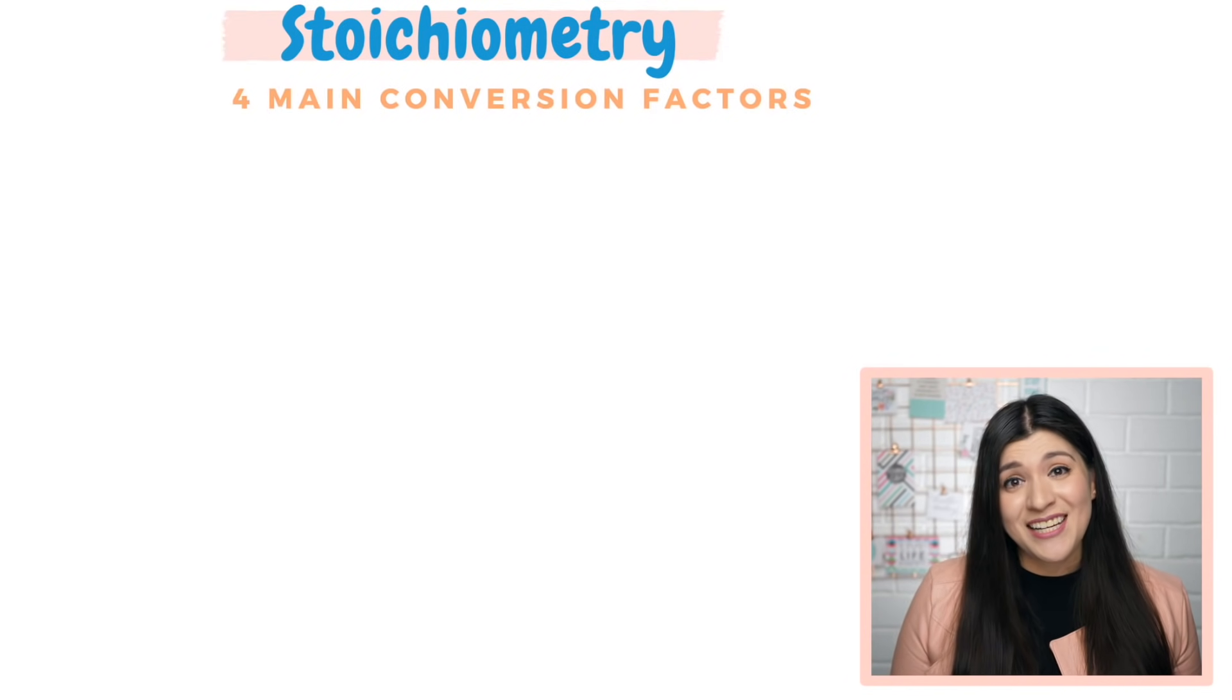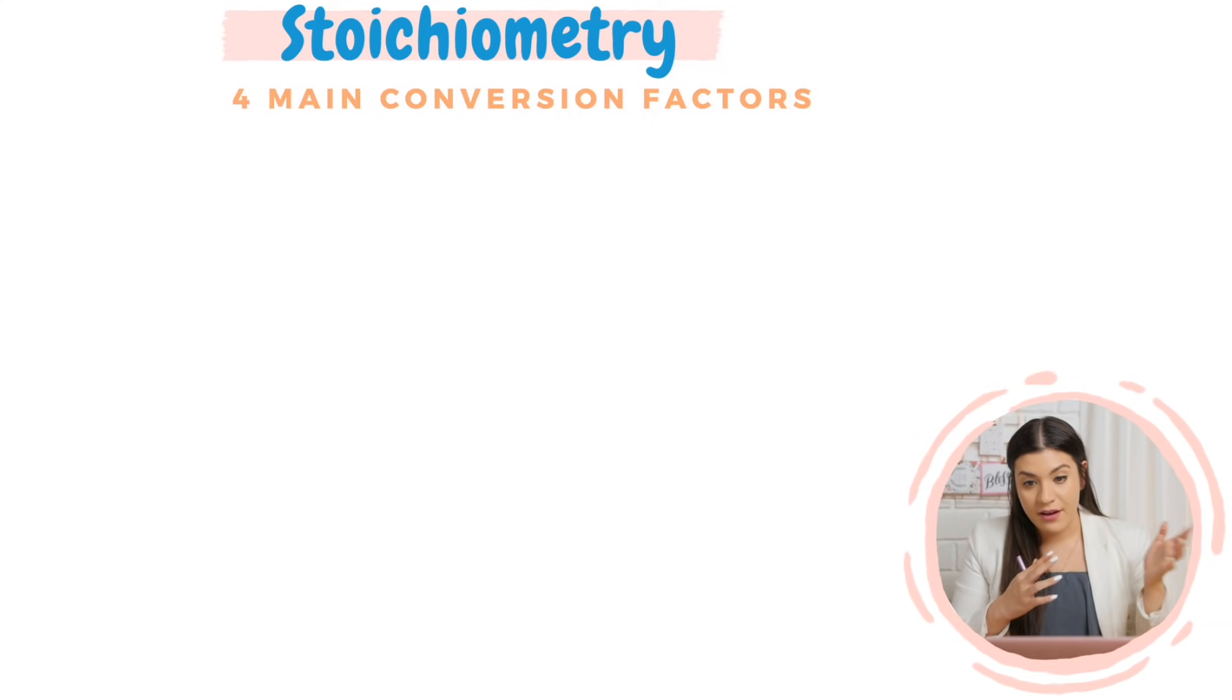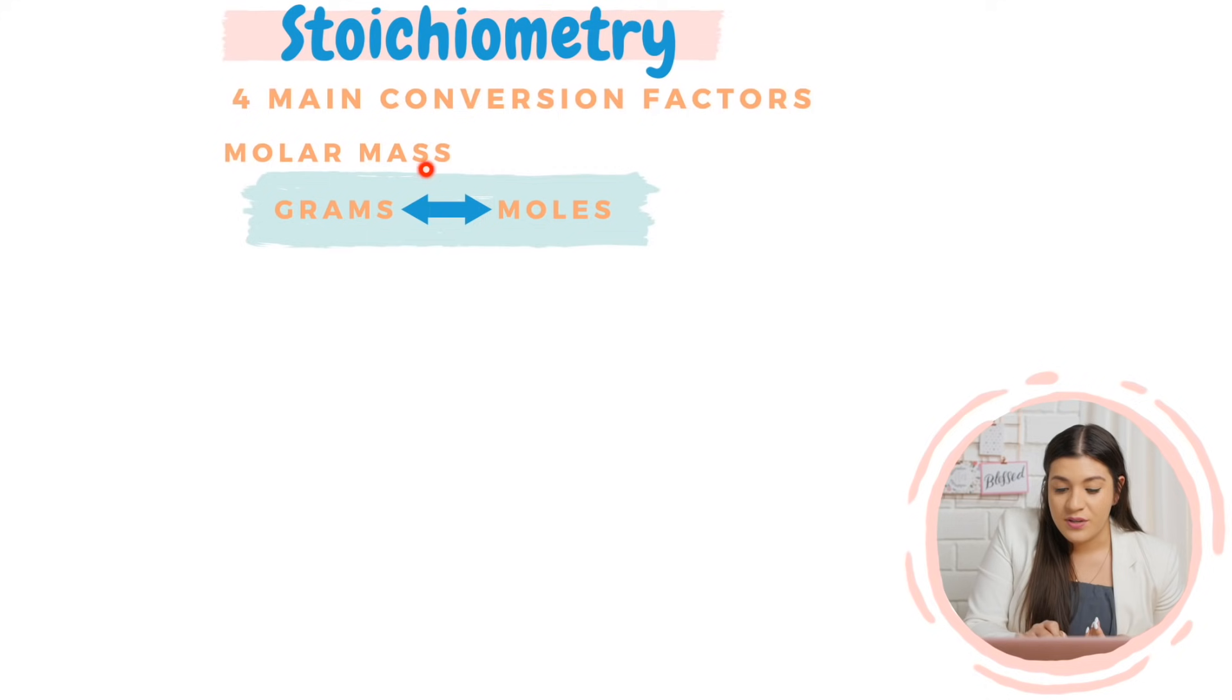All right, you ready to do some stoichiometry? So these four conversion factors, how I want you to think of stoichiometry and these board problems, they're kind of like puzzles. And the puzzle pieces are these four main conversion factors. So these conversion factors are going to tell you how to connect everything and how to move from one unit to a completely different unit. So the first one that I want you to write down is molar mass. We know, but I'm still going to have you write it down, that molar mass allows you to go from grams to moles or vice versa.